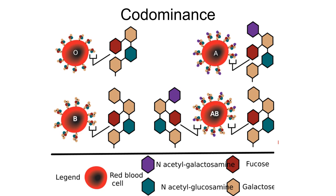Another great example of codominance is blood types in humans and other mammals. There are four potential blood types determined by one gene with three alleles. You can be type O, A, B, or AB. For all of these, there is a core structure of sugars on a protein embedded in the red blood cell membrane. If you have type A, you have an additional sugar added to that core. If you have type B, you have a different additional sugar. If you're type AB, you have both.